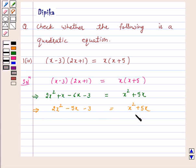Shifting the terms from the right hand side to the left hand side, we get 2x² - x² - 5x - 5x - 3 = 0.